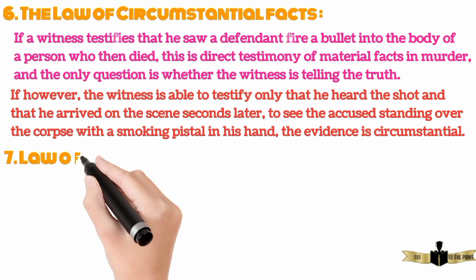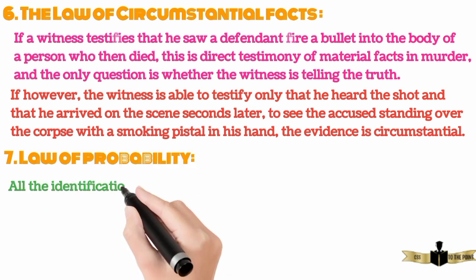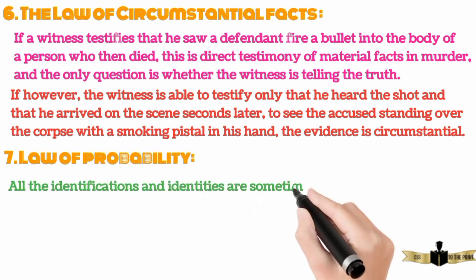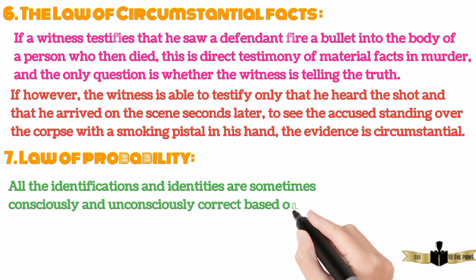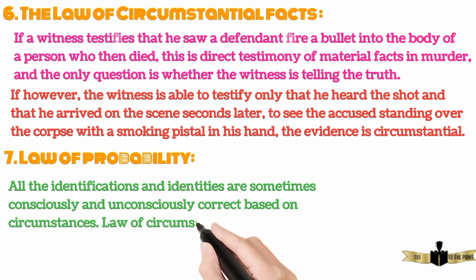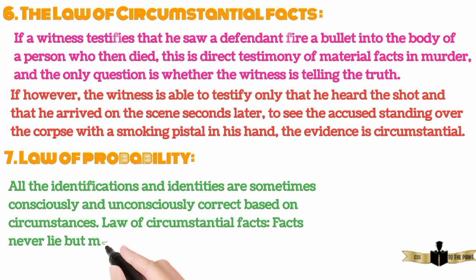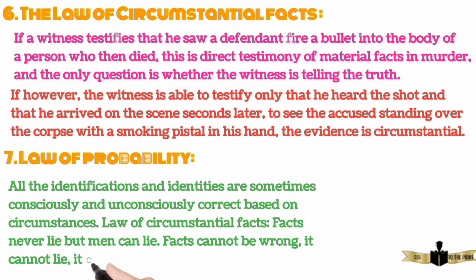Seventh, Law of Probability. All the identifications and identities are sometimes consciously and unconsciously correct based on circumstances. Law of Circumstantial Facts — facts never lie but men can lie. Facts cannot be wrong, it cannot lie, it cannot be wholly absent.